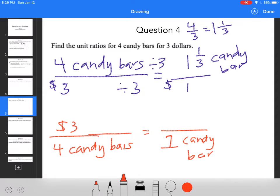So I would divide by four, divide by four, and that would be three-fourths of a dollar, which is $0.75. So I know each candy bar costs $0.75.